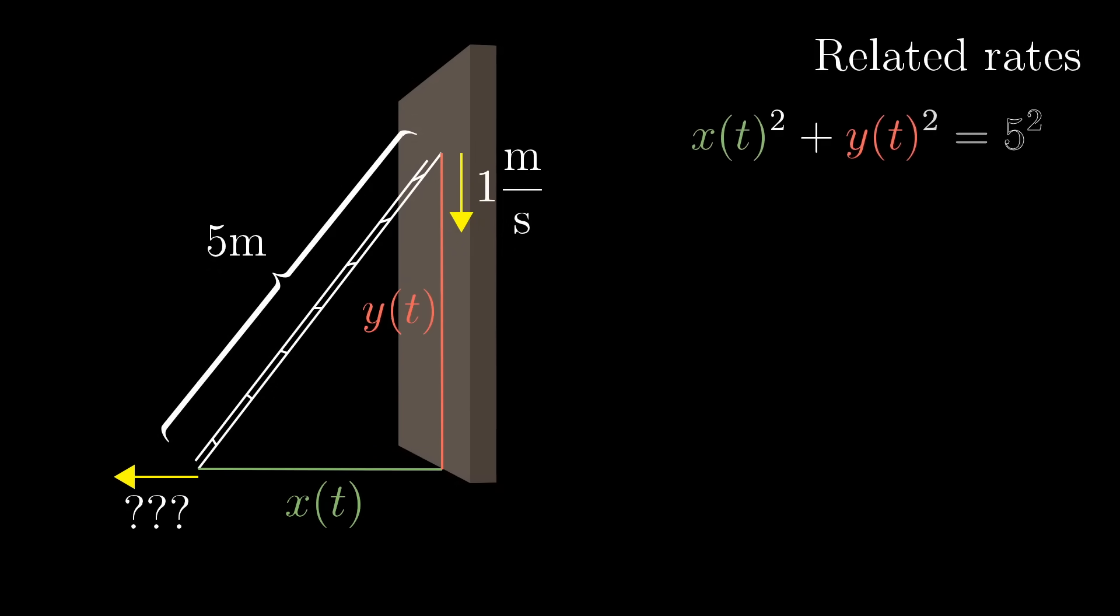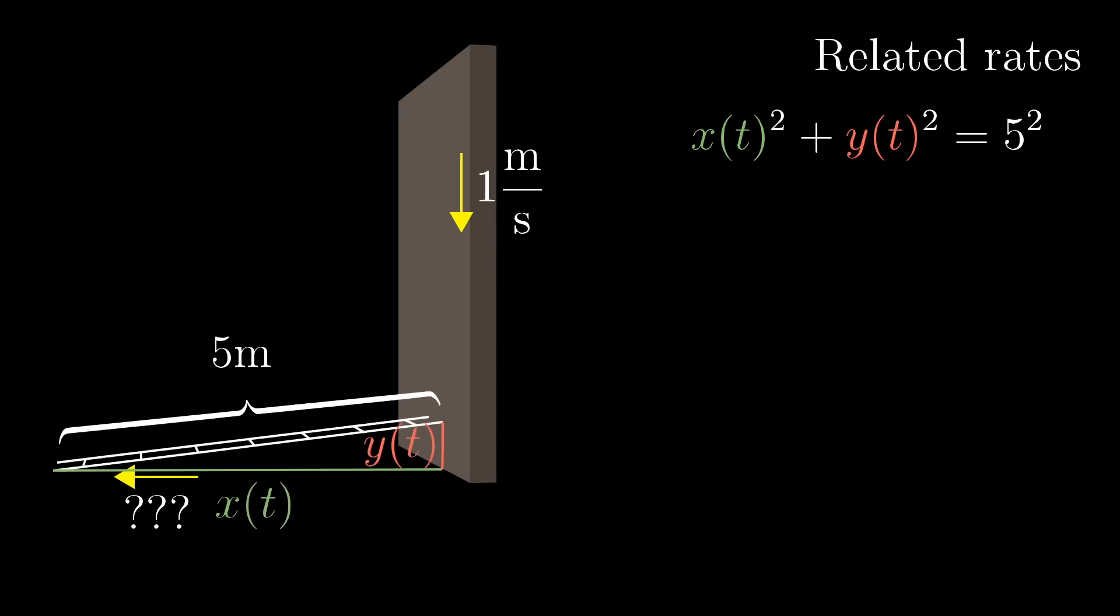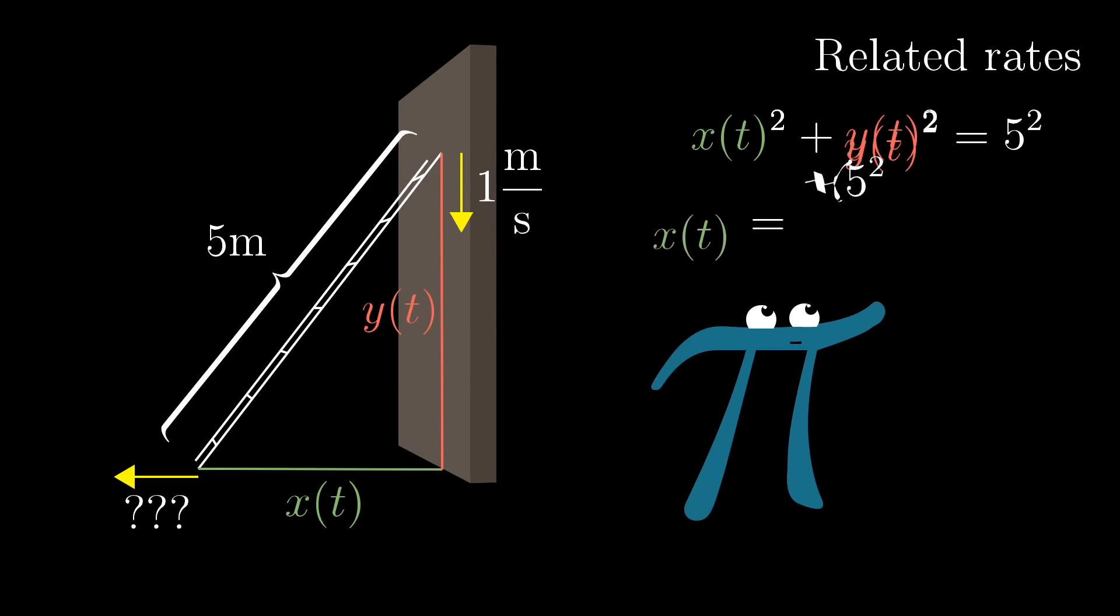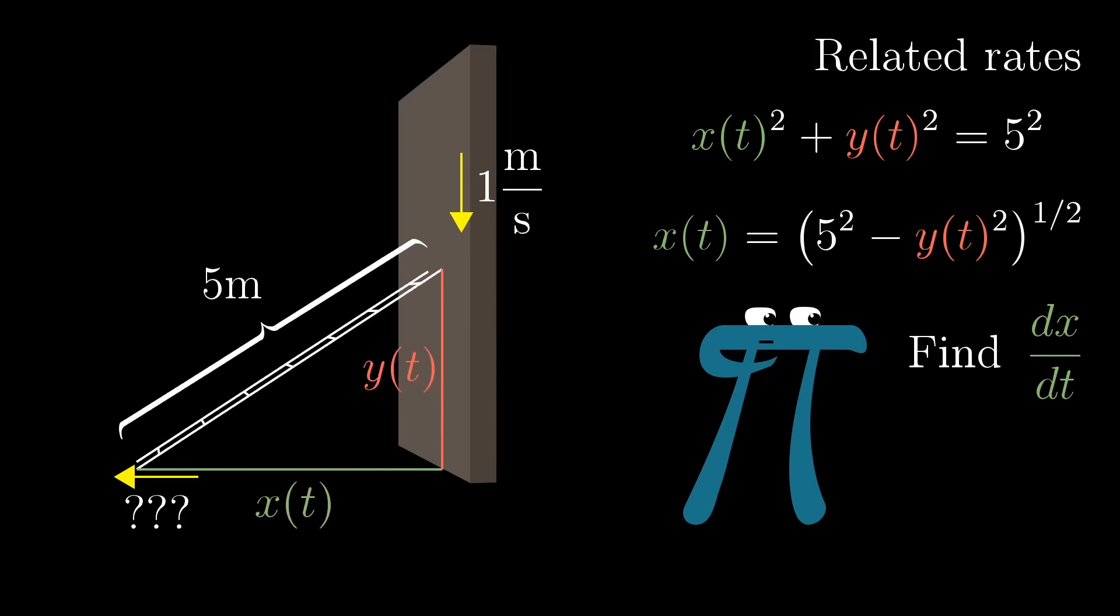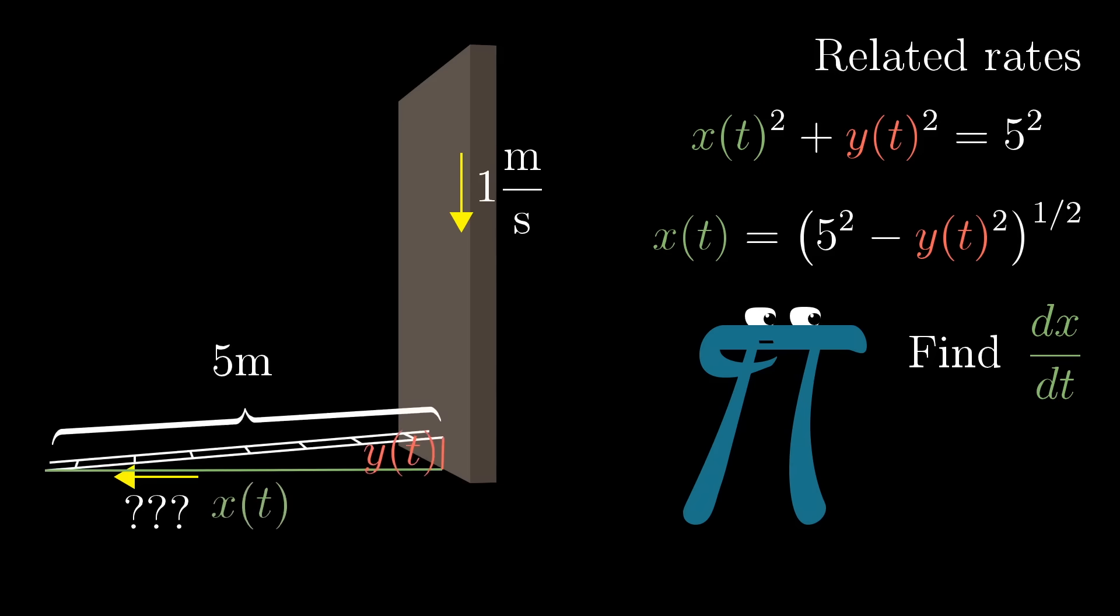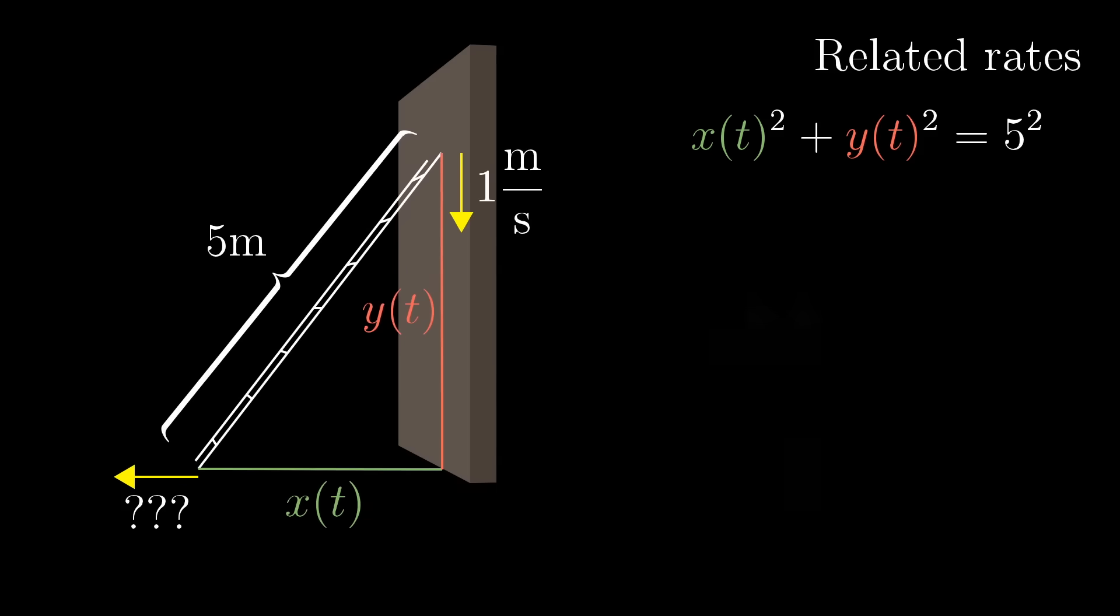The key equation that relates these terms is the Pythagorean theorem, x(t)² + y(t)² = 5². What makes that a powerful equation to use is that it's true at all points of time. Now one way that you could solve this would be to isolate x(t), and then you figure out what y(t) has to be based on that 1 meter per second drop rate, and you could take the derivative of the resulting function, dx/dt, the rate at which x is changing with respect to time. And that's fine, it involves a couple layers of using the chain rule, and it'll definitely work for you, but I want to show a different way that you can think about the same problem.